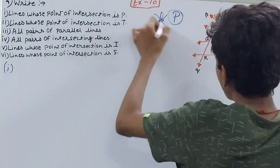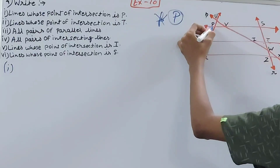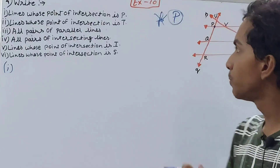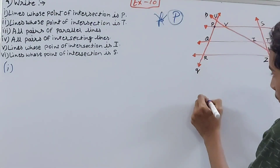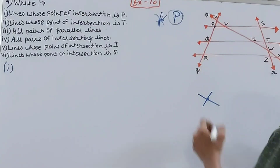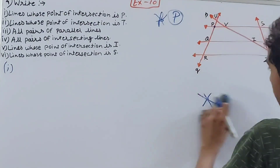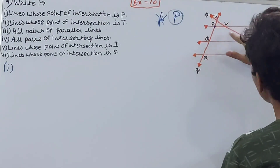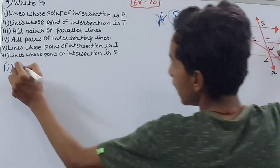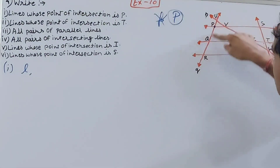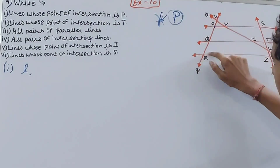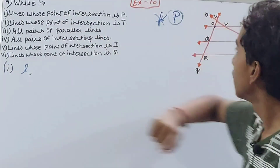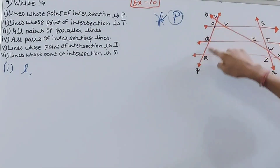For part one, we have to name the lines whose point of intersection is P (the capital P). The point of intersection is where two or more lines meet. Looking at the figure, we can see two lines meeting at point P: line l and line q.